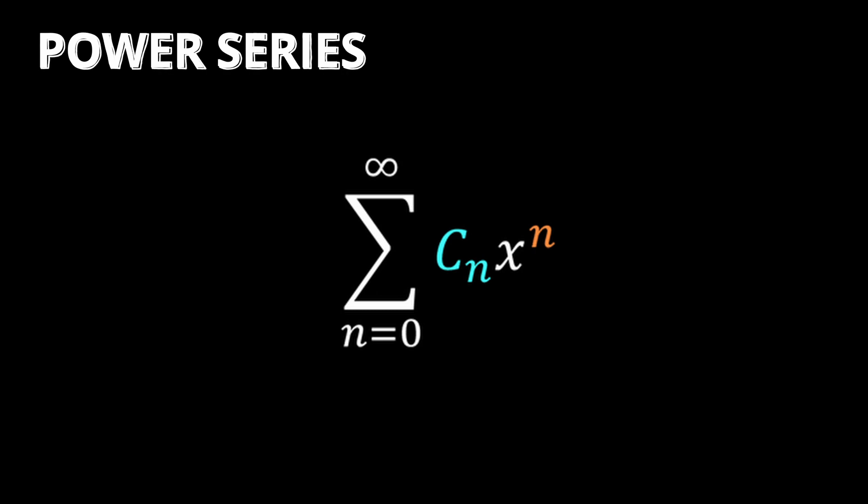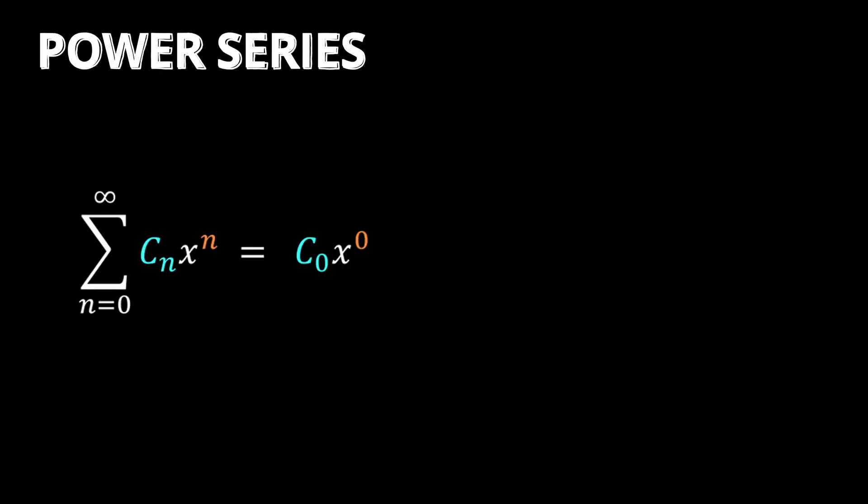Now admittedly, that's a lot to take in, but all you have to do to get your series is substitute n equals 0 giving c sub 0, n equals 1 giving c sub 1 multiplied by x, n equals 2 giving c sub 2 multiplied by x squared, and so on.